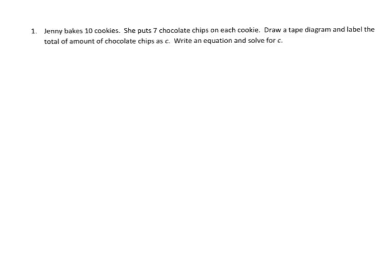So we're going to use a tape diagram to solve this problem. The first thing I'm going to do is read the problem. It says: Jenny bakes 10 cookies. She puts 7 chocolate chips on each cookie. Then it says: draw a tape diagram and label the total amount of chocolate chips as C. So our variable that we don't know is C. And then it says: write an equation. So let's begin with that tape diagram.